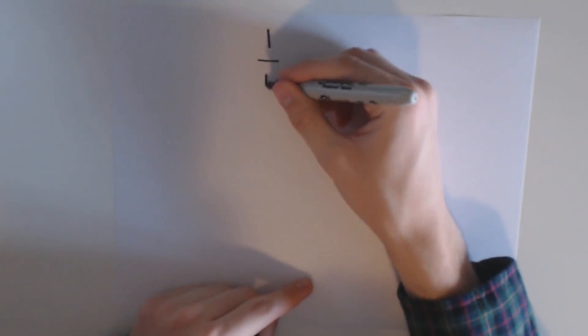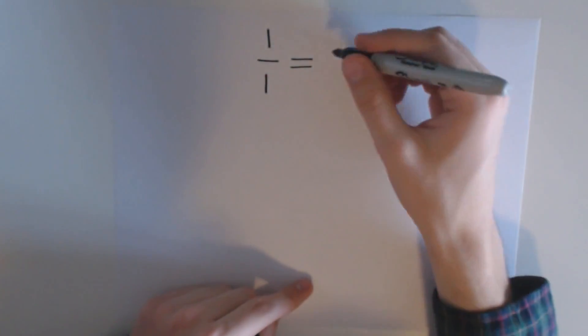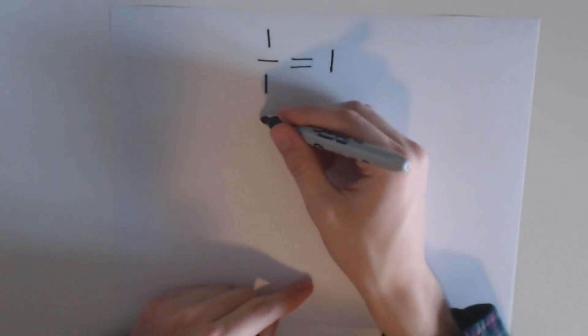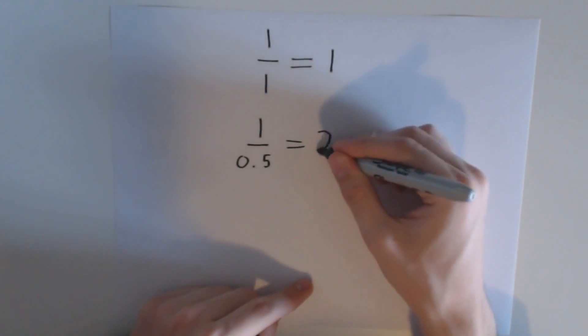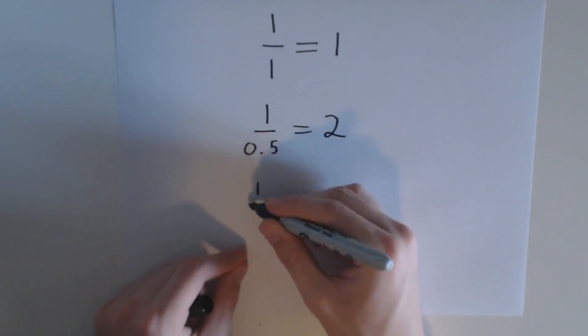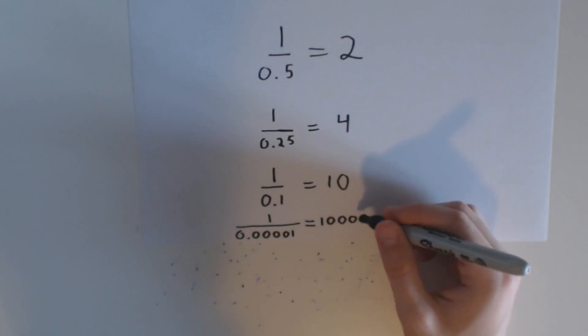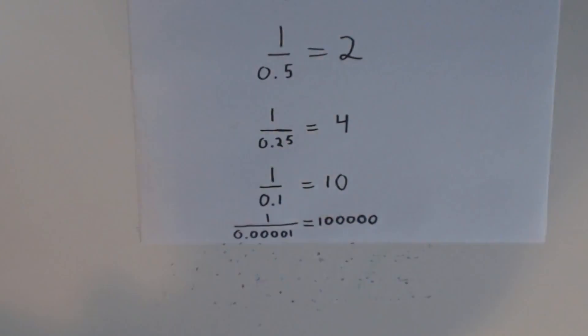Let's start with a simple fraction, say one divided by one, which equals one. Now, let's take the denominator and make it a little closer to zero, like 0.5. Now our answer is 2. If we keep making our denominator closer and closer to zero, we get bigger and bigger answers as a result.